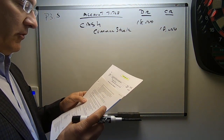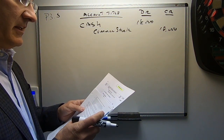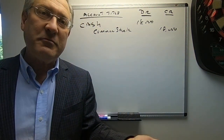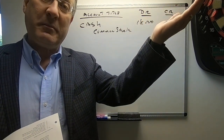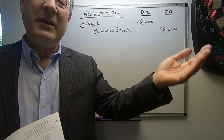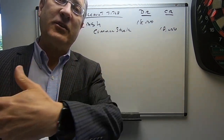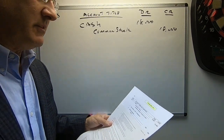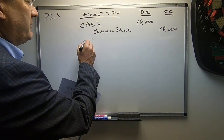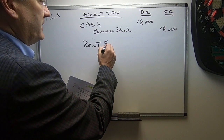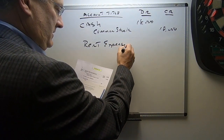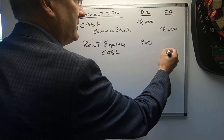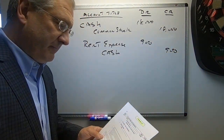Next item: paid office rent for the month of $900. So we have a rent expense, and they paid cash. An expense goes up — rent expense. We increase an expense with a debit, and cash goes out the door, so cash goes down and we decrease cash with a credit. Our next transaction is a debit to rent expense for $900 and a credit to cash for $900.